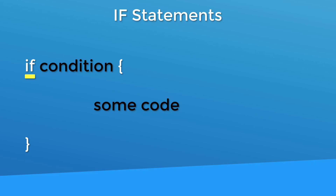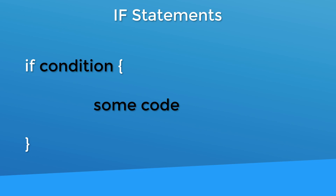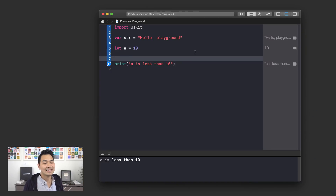An if statement starts with the if keyword followed by a space and then your condition, which you're going to test. Then you have a space followed by a set of braces — some people call them curly brackets. Inside those braces you put the code that is only going to run if the condition evaluates to true. If that condition turns out to be false, the code inside the braces will not be run.